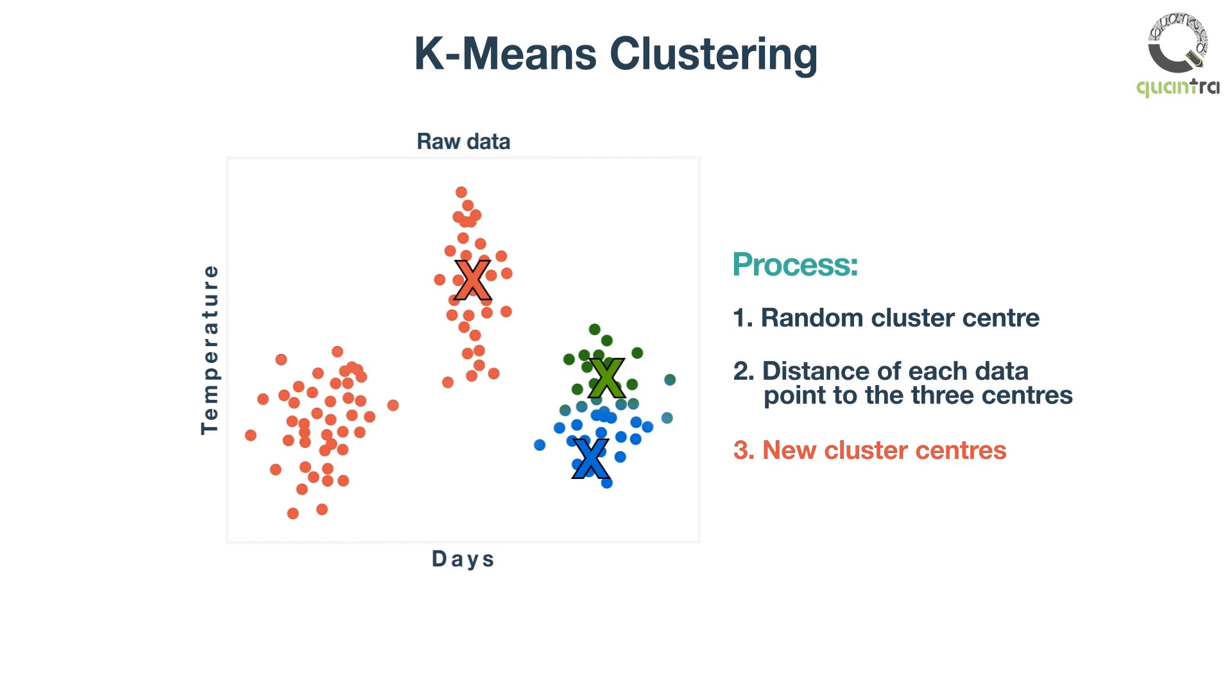Once we have finished clustering all the data points like this, we take the mean of all the data points in each cluster to generate new cluster centers. We keep repeating this process until no further changes take place in the clustering of data points.